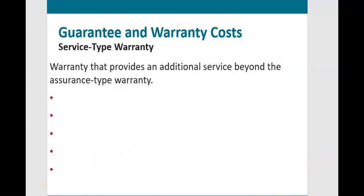There are two types of warranties. The assurance type warranty comes with the product at no additional cost to the customer. The service type warranty is an optional warranty the customer can choose to buy — either covering a product with no warranty at all, or acting as an extended warranty. For example, your iPhone might come with a one-year warranty, and you can choose to pay for extended coverage. Service type warranties are recorded as a separate performance obligation.